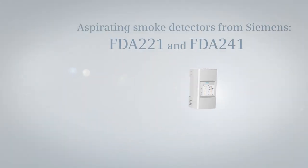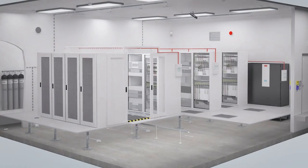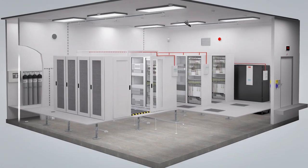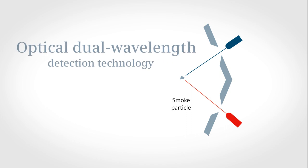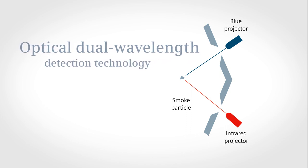Siemens introduces a technology that further increases detection reliability. To differentiate between smoke and deceptive phenomena, the new aspirating smoke detectors use two wavelengths: one blue and one infrared light source.